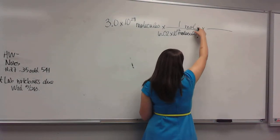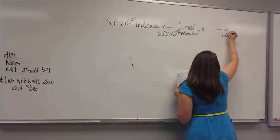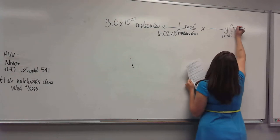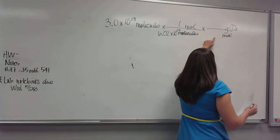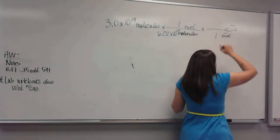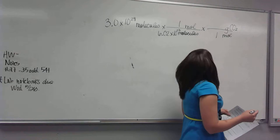And then we want to get rid of moles, because we don't want moles. We want grams. So moles are going to go on bottom, and we want grams. But grams of what? Grams of CO2. So what's our number that goes with moles? That's just one. What does G tell us? G means go to the periodic table.